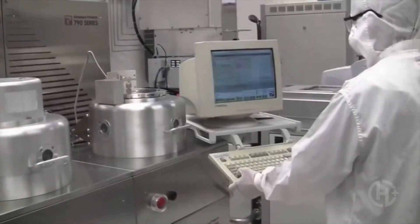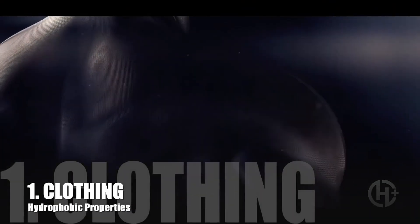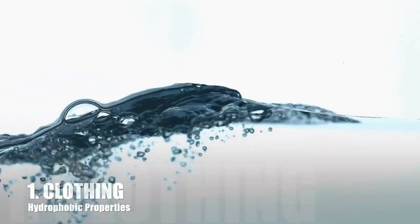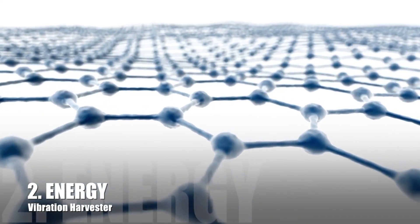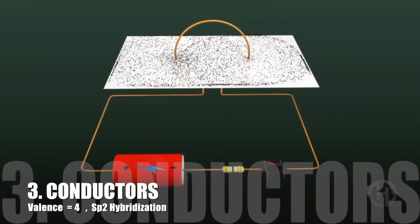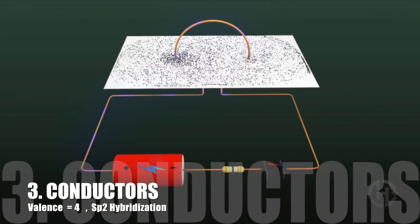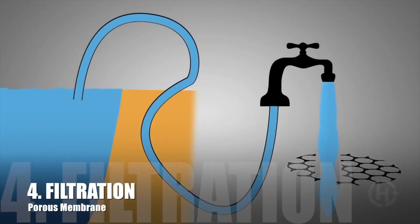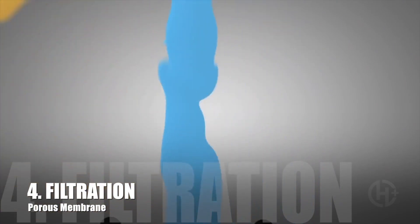Including but not limited to graphene clothing thanks to its hydrophobic properties, limitless clean energy thanks to its vibratory properties, superconductors thanks to its valence of 4 and sp2 hybridization, and lastly, limitless clean water thanks to its porous honeycomb structure.